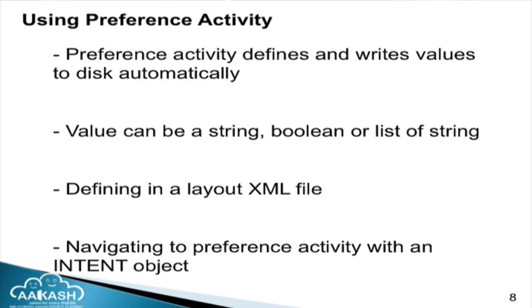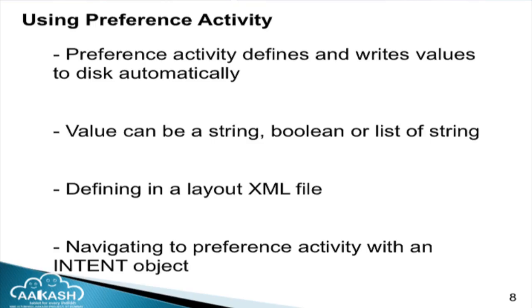When using preferences, we create a PreferenceActivity, which defines and writes values to disk automatically. Values can be strings, Booleans, or lists of strings — any data type including int, long, or float. You can also define preferences in XML using a preference.xml file. You can navigate to a PreferenceActivity using an Intent object.